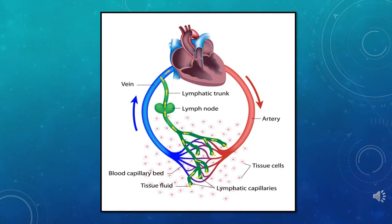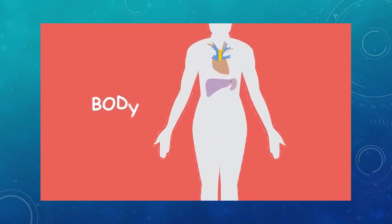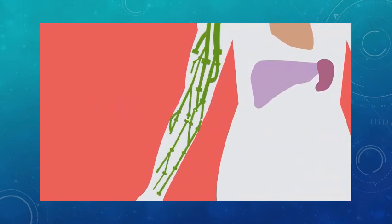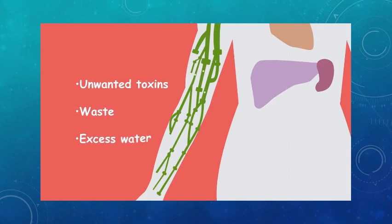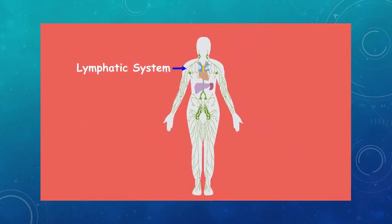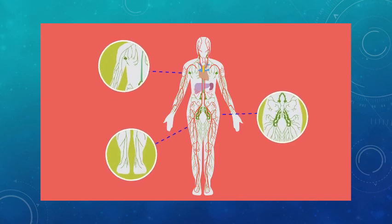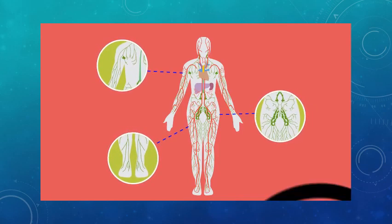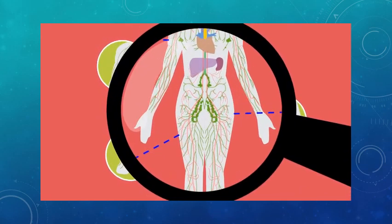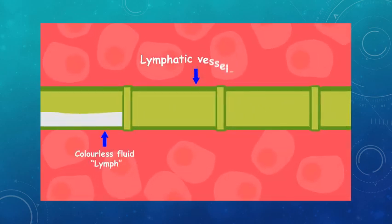Look at the following video to understand the functioning of the lymphatic system. Did you know your body has its own version of a sewer system for removing unwanted toxins, waste, and excess water from the body? This is called our lymphatic system. Like our blood circulation, the lymphatic system is made up of millions of little vessels that branch all around our body. But whereas arteries and veins carry blood, the lymphatic vessels are much finer and carry a colorless fluid called lymph.